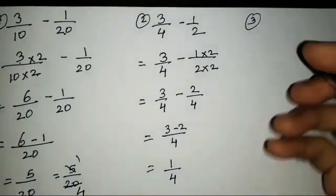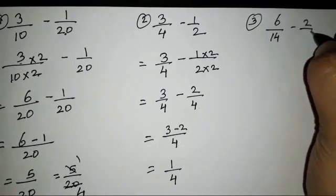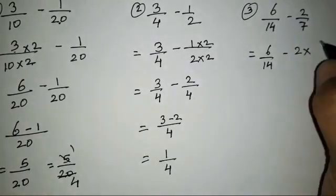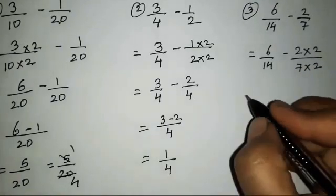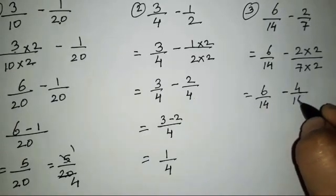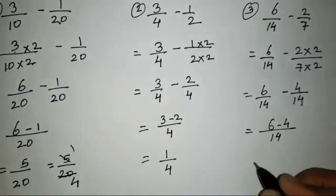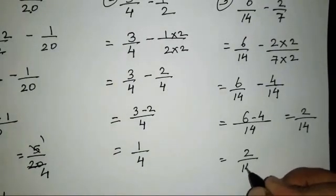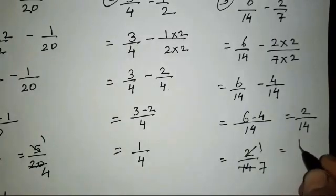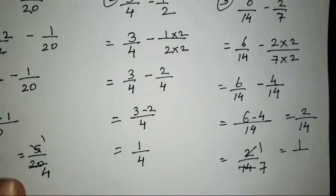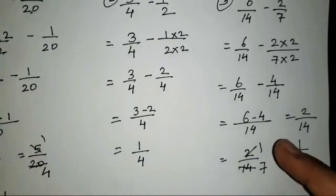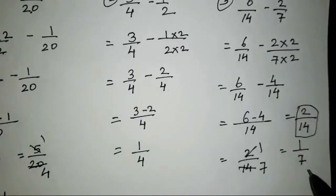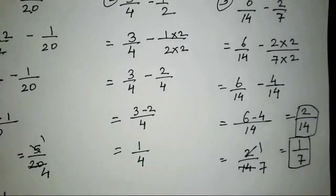The third sum is 6/14 minus 2/7. We keep 6/14 as it is and multiply 2/7 by 2/2 to get 4/14. Then 6 minus 4 equals 2/14. Both numbers are divisible by 2, so we simplify to get 1/7. I recommend reducing fractions to their simplest form.